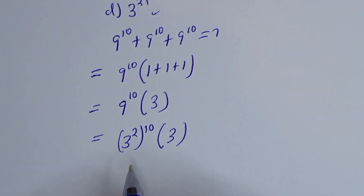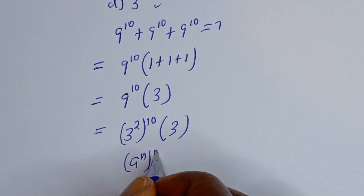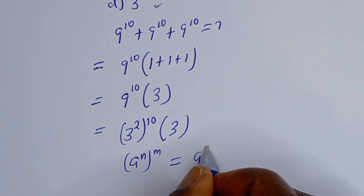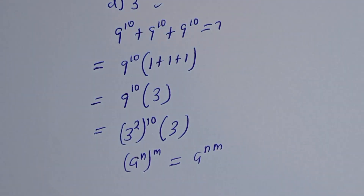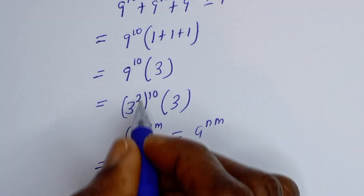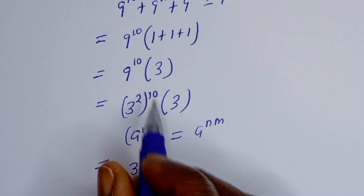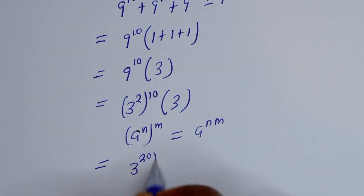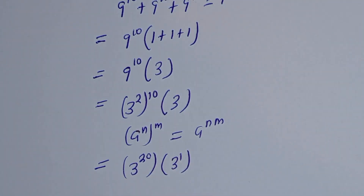Take note of this rule: if you have a raised to the power n, raised to the power m, this equals a raised to the power n times m. Applying this, 3 squared to the power of 10 becomes 3 to the power of 20, multiplied by 3 to the power of 1.